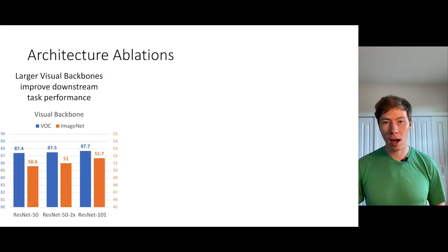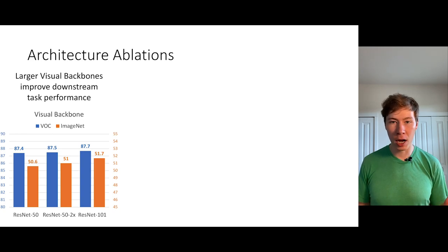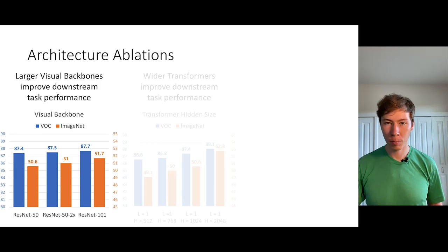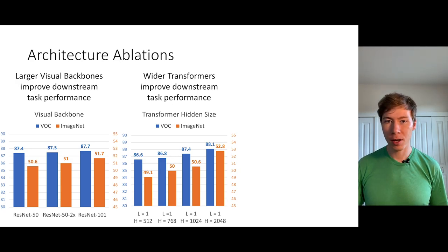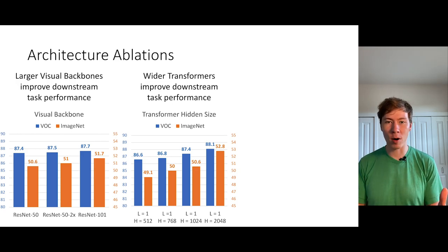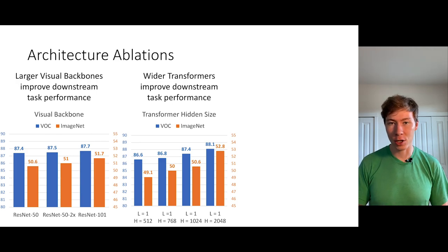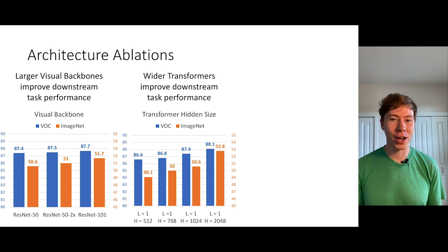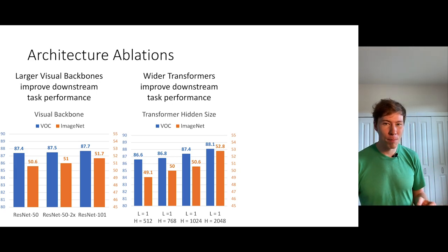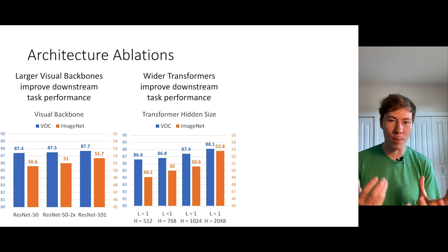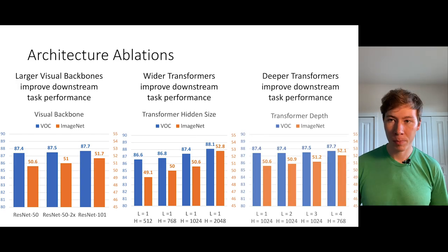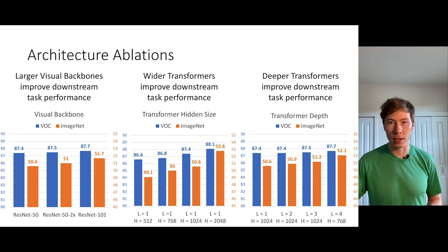We tried ablating the architecture. Using larger visual backbones works — most of our experiments use ResNet-50, but we can also use a Wide ResNet or ResNet-101. Interestingly, using a wider transformer also improves results. This is non-intuitive because the transformer is thrown away after pre-training and we only use the CNN for downstream tasks. My intuition is that a more powerful transformer lets it handle the linguistic parts of the model and pushes the brunt of visual modeling onto the visual backbone. Similarly, deeper transformers also improve performance on downstream tasks.